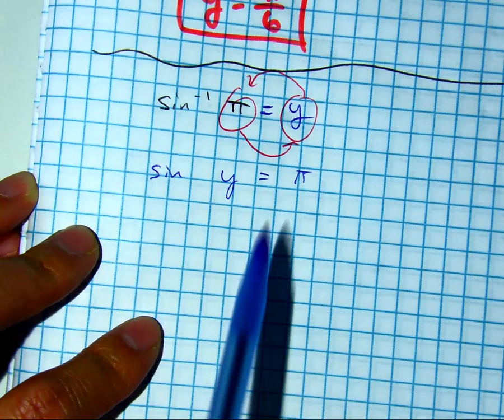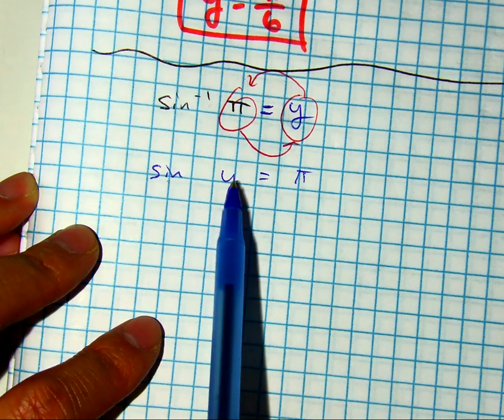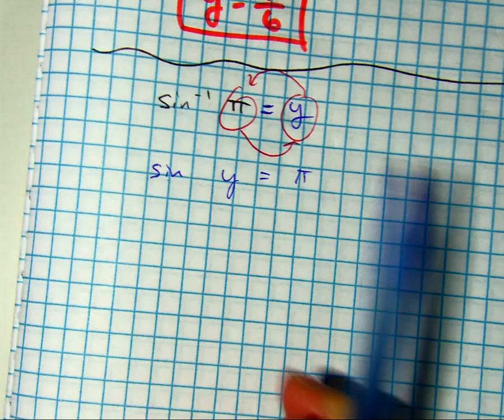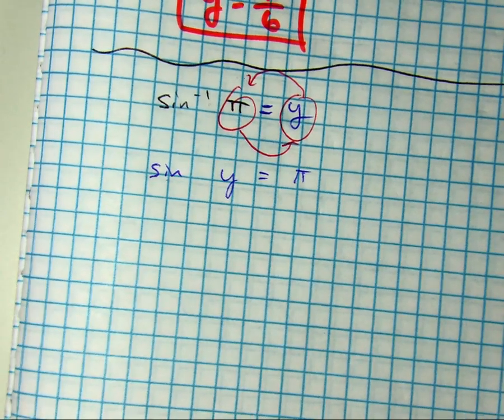Okay, this is kind of weird, right? Sign of an angle, sign in either degrees or radians, sign on my unit circle equals pi.